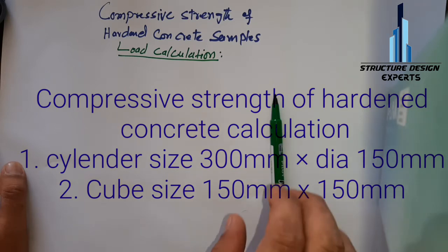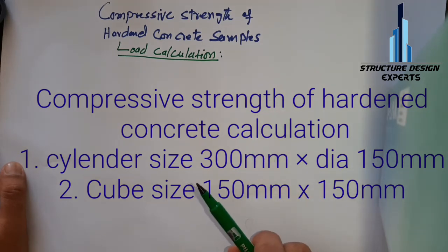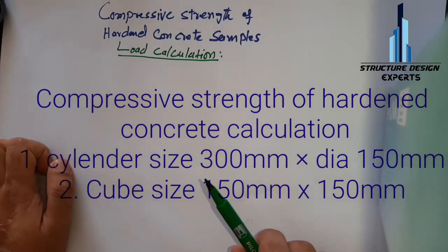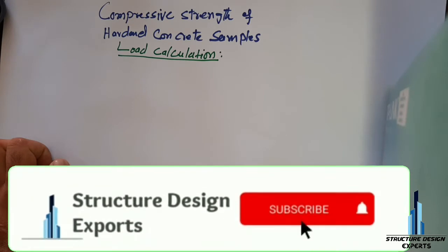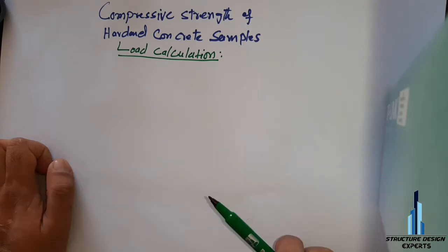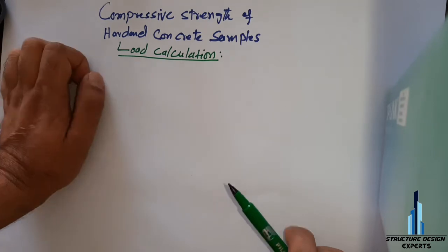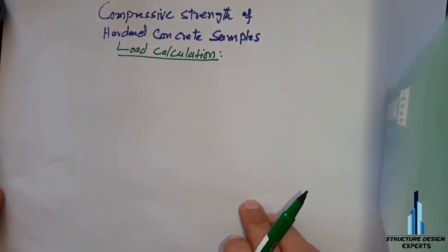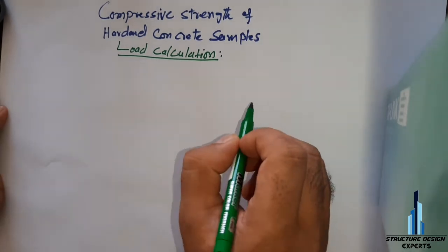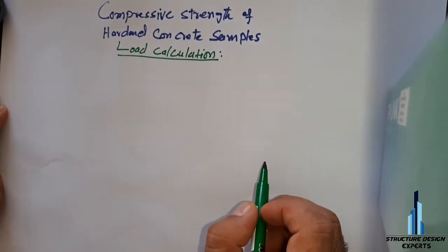The samples are usually collected from fresh concrete — three samples for seven days testing and three samples for 28 days after placing of concrete. We will study about two types of samples collected from fresh concrete: one is cube and one is cylinder.